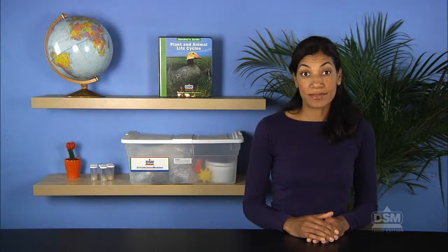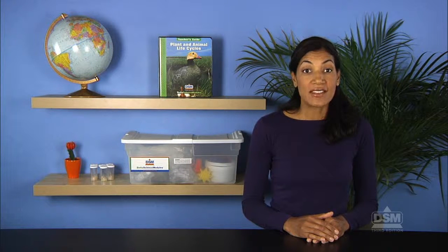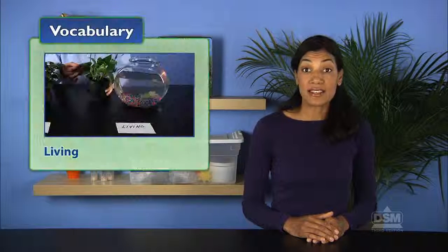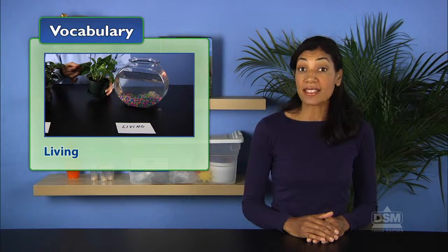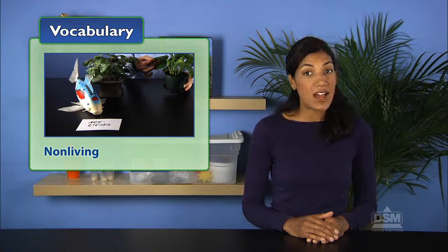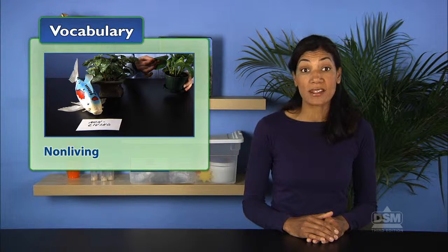Next, lead a discussion on the words living and nonliving and help students understand that the two terms have opposite definitions. Inform students that a living thing, such as a real animal, is alive and that a nonliving thing, as in the toy animal example, is not alive and has never been alive.